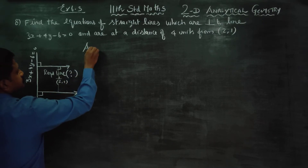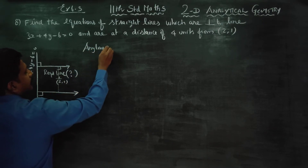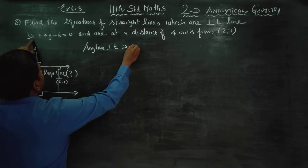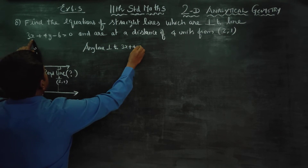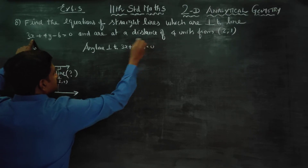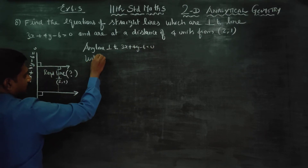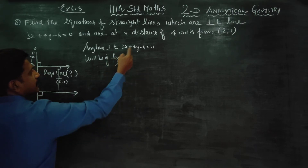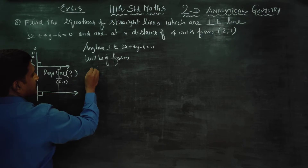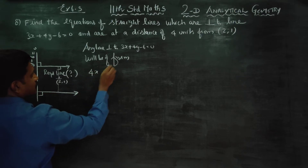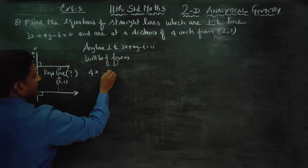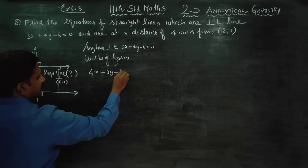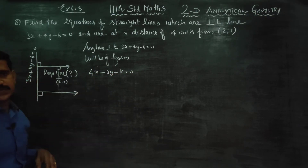Any line perpendicular to 3x + 4y - 6 = 0 will be of the form 4x - 3y + k = 0. This is the form of the required line.